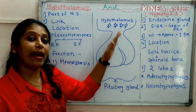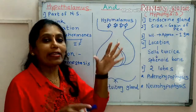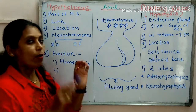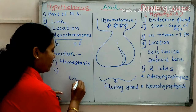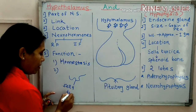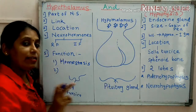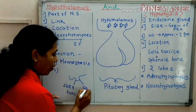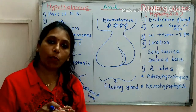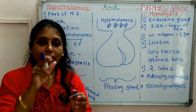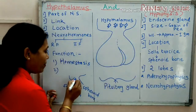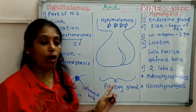Location: pituitary gland is present at the base of hypothalamus, and its location is in the brain. A saddle-like depression is present, which is called as sella turcica. This depression is present in one bone and that bone is called as the sphenoid bone. The sphenoid bone has this saddle-like depression called sella turcica, and the pituitary gland is situated exactly in this location.